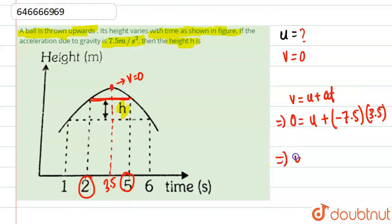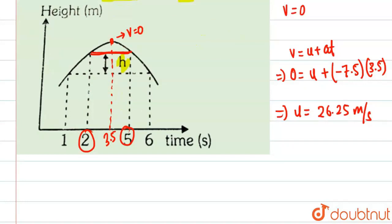So this u will come out to be 26.25 meter per second. So now what we have to do is find y at this point y1, and we have to find y2, and we will subtract it basically.